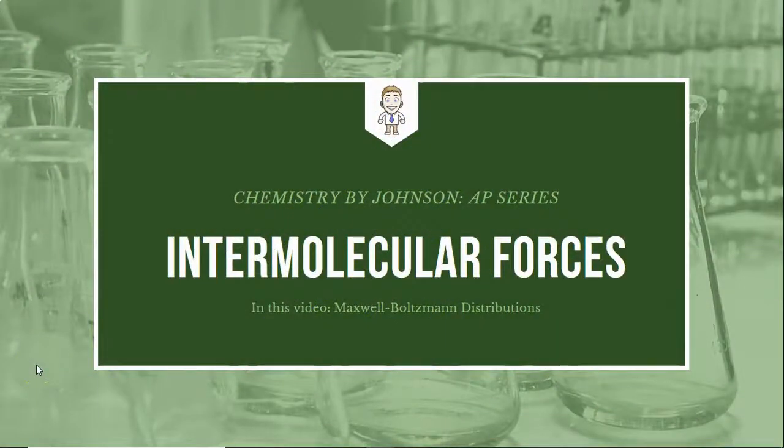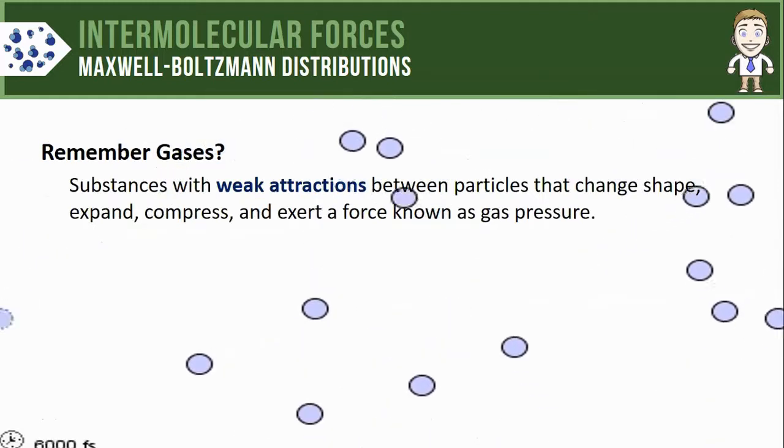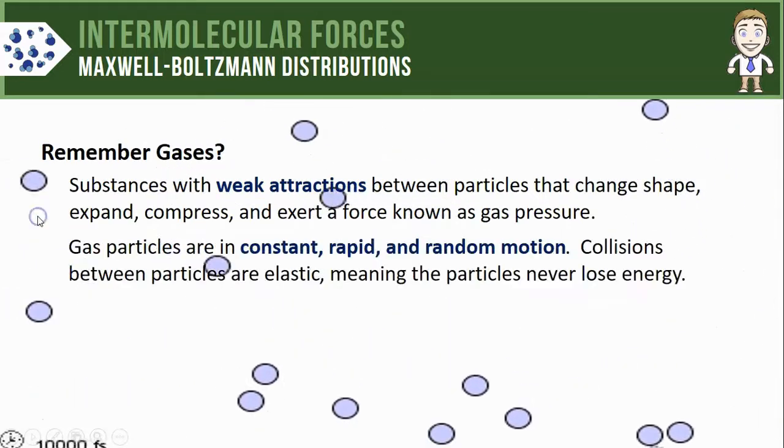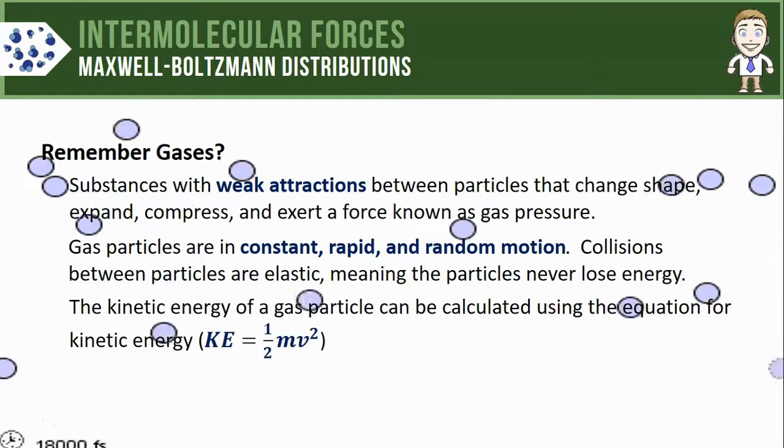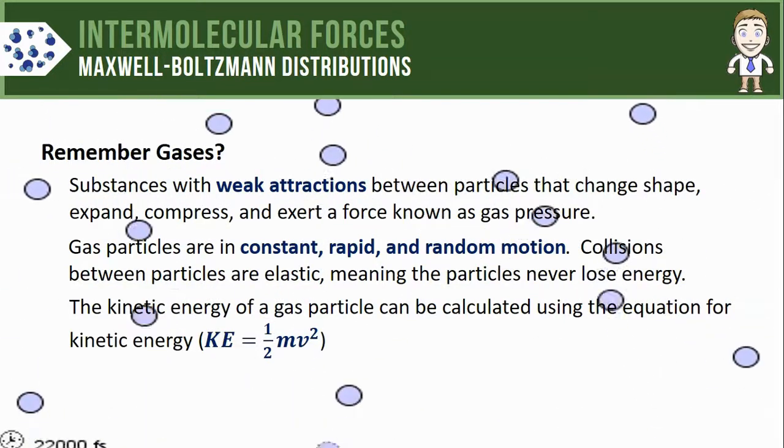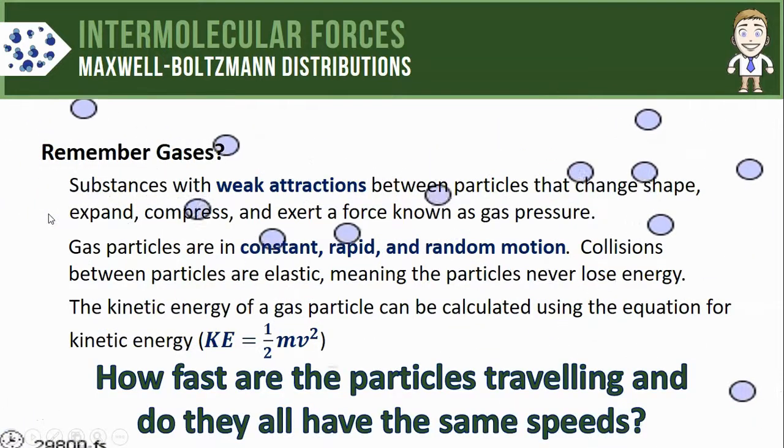Hey everyone, in this AP Chem series video we're going to take a look at Maxwell-Boltzmann distributions. First, remember that gases are substances with particles that have very weak attractions between them. They're moving constantly, rapidly, and randomly, and you can calculate the kinetic energy of those gas particles with the equation one-half mv squared.